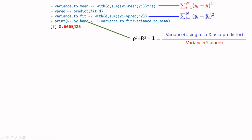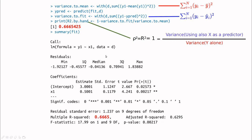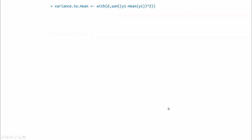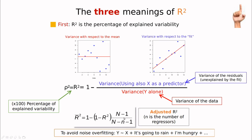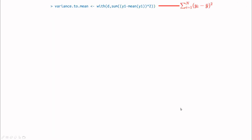Let's compute R-squared by hand. This is one minus the ratio of those two variances, and we obtain 0.66. What if we use R to compute this for us? If we take the summary of the fit, you can see that R-squared is the same — we obtain the same numbers because we are doing the same calculation. The adjusted R-squared is slightly different, because we are dividing by a corrected number, but essentially we have the same result.